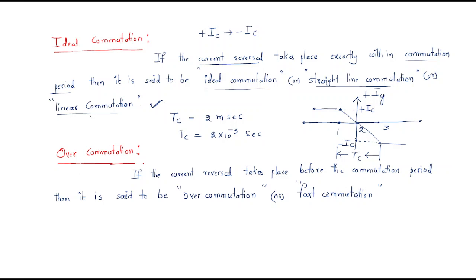Hello everyone, we are discussing commutation. In the last session we discussed ideal commutation — what is ideal commutation? The current reversal will be within the commutation period. For example, changing from plus IC to minus IC within exactly two milliseconds — that is called ideal commutation.